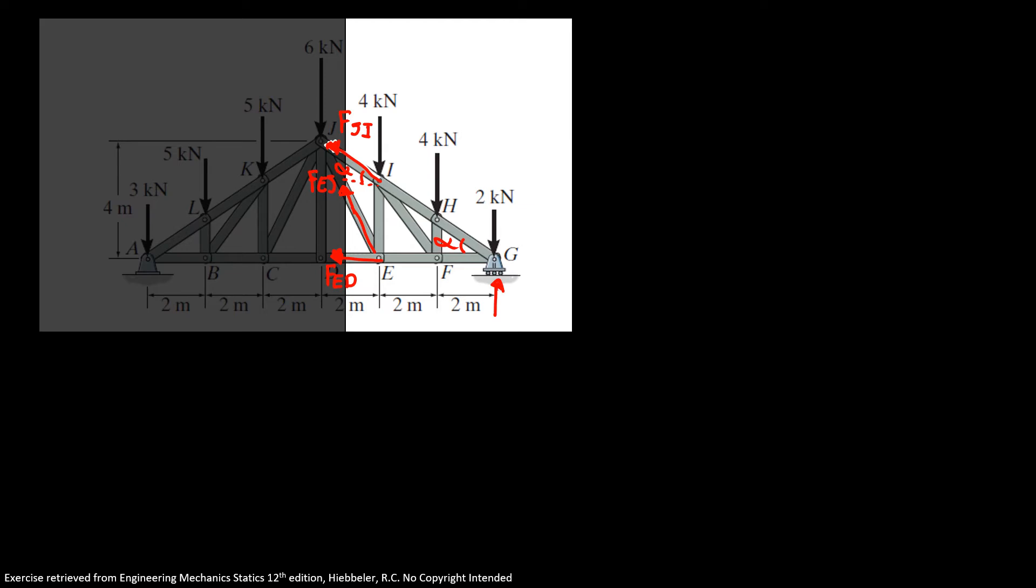Our reaction G of 13.5 kilonewtons. So first I'm going to find the member F_JI doing the sum of moments about point E. So the sum of moments about point E equals 0. So here I have 13.5 times 4 minus 2 times 4 minus 4 times 2.